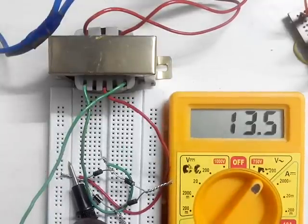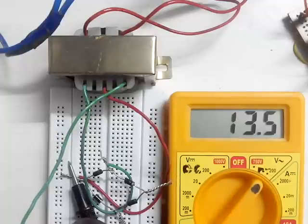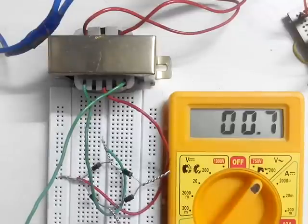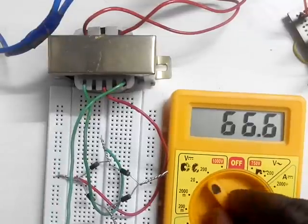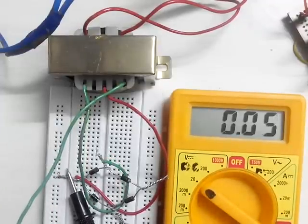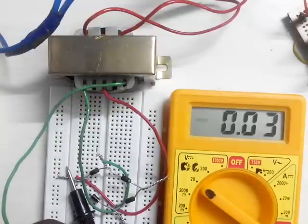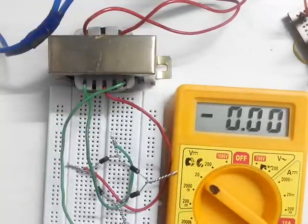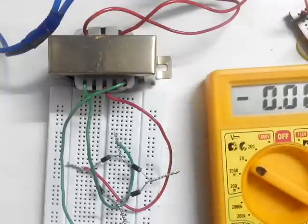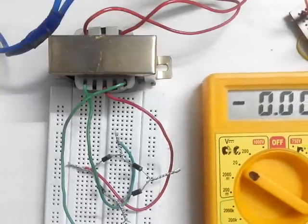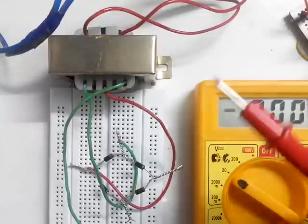The transformer is giving almost 13.5V AC output. If we convert it to DC, it will show zero voltage because the current is not DC, it is AC. The transformer has stepped down the voltage from 230 volts to 13 volts as we can see.